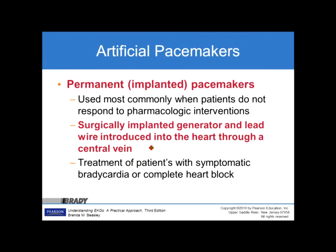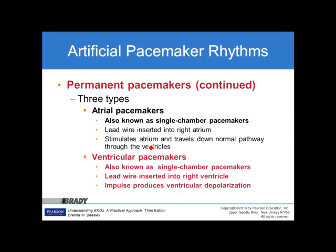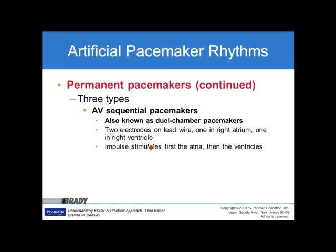Permanent implanted pacemakers are used most commonly when patients do not respond to pharmacological intervention. A surgically implanted generator and lead wire are introduced into the heart through the central vein for treatment of symptomatic bradycardia or complete heart block. There are three types: atrial pacemakers, also known as single chamber, with the lead wire in the right atrium; ventricular pacemakers, also single chamber, with the lead wire in the right ventricle; and AV sequential pacemakers, a dual chamber type, with one lead in the right atrium and one in the right ventricle, stimulating first the atria and then the ventricles.